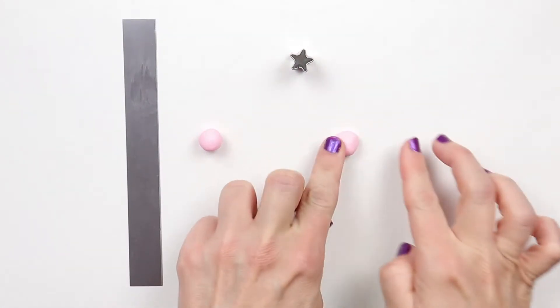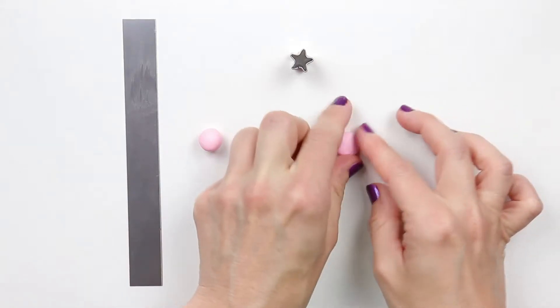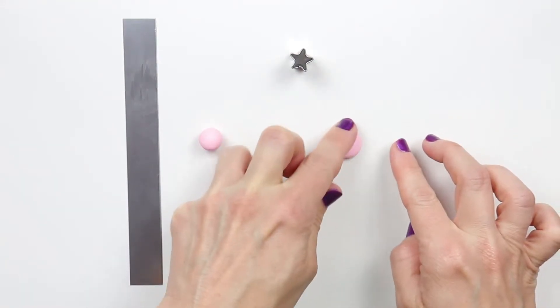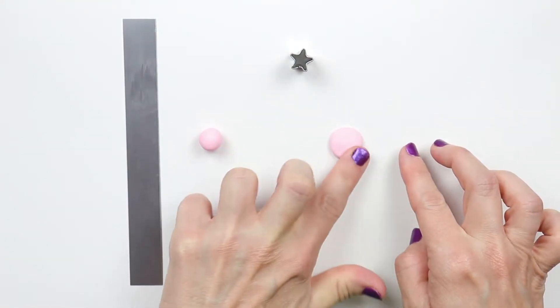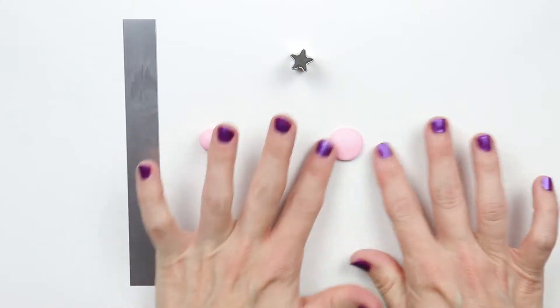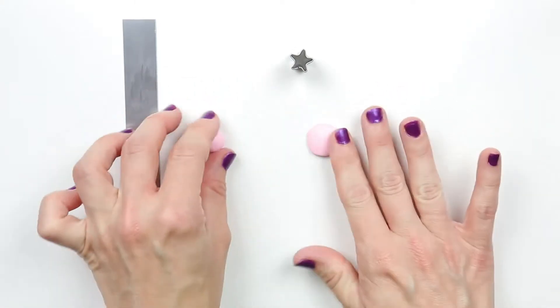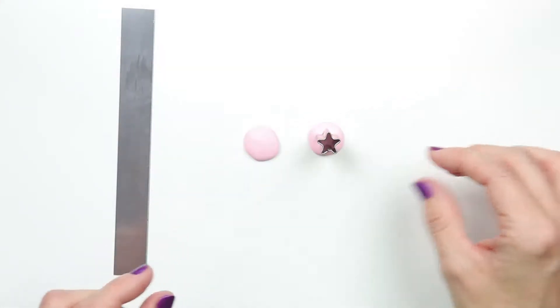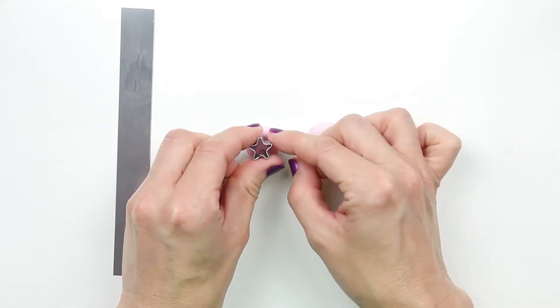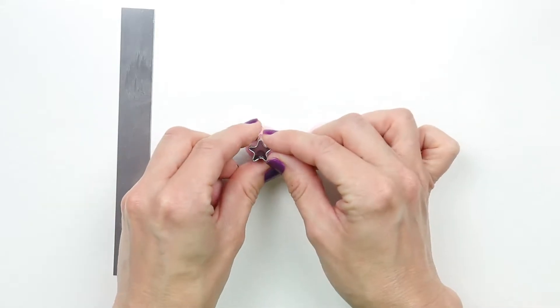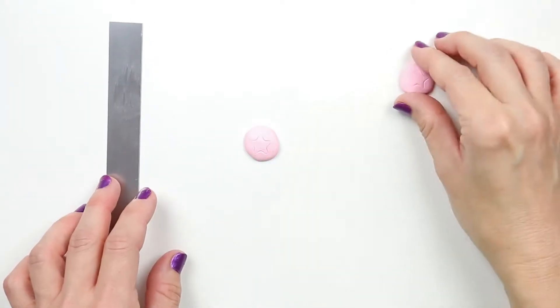Flatten your ball of pink clay so that the center is domed and it gets flatter as you go out towards the edges. Place the star cutter on the clay and press down very gently. We only want the outline of the clay cutter. We don't want to cut all the way through.